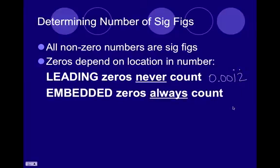Embedded zeros always count. Let's say we had 102. This zero is in between, it's embedded, two non-zero numbers, so that guy counts. So, this number has one, two, three sig figs.